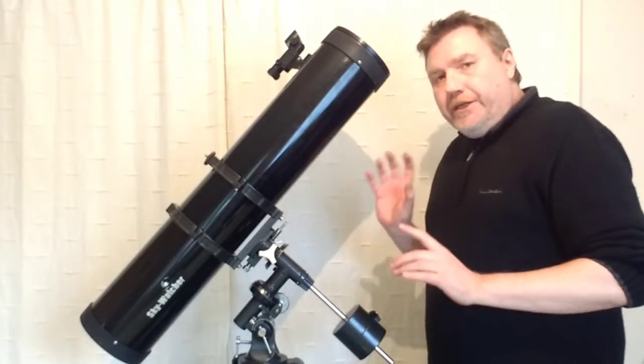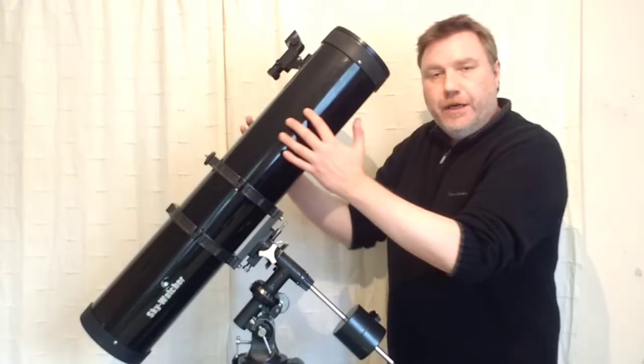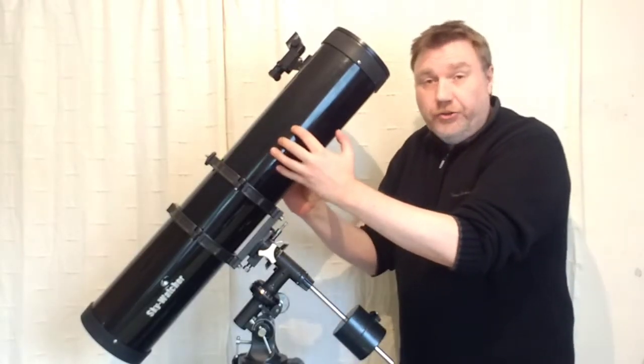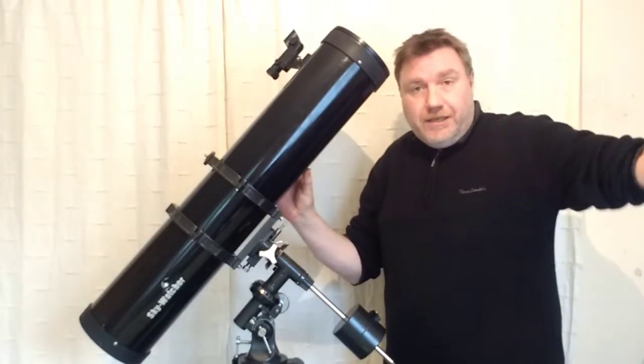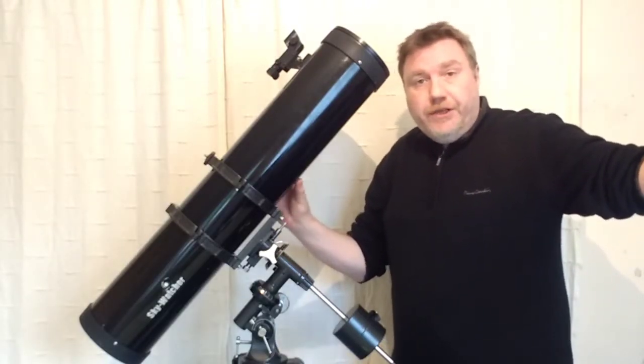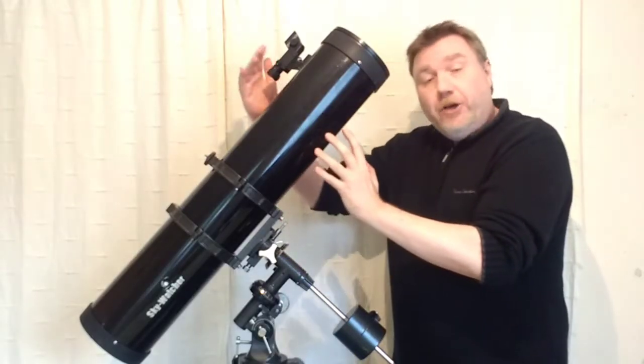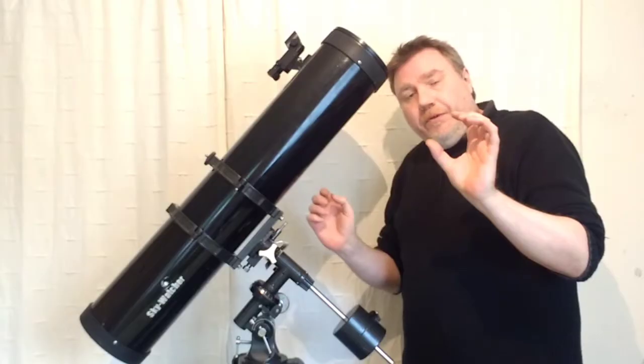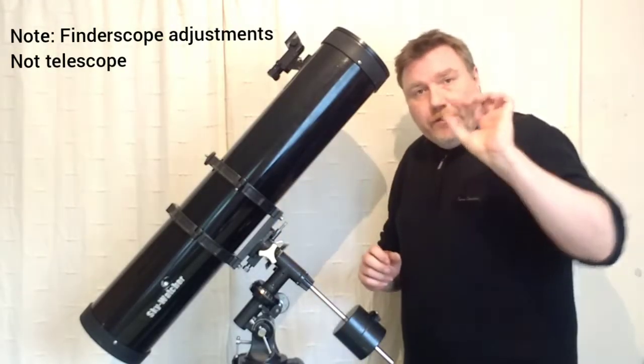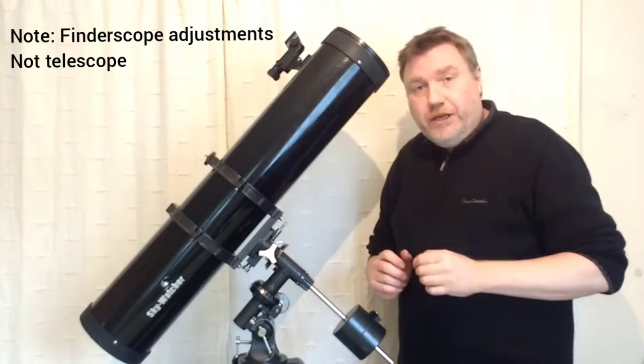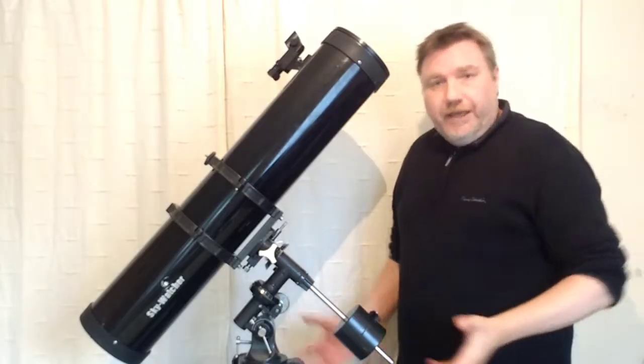The other thing you've got to make sure that it's set up is your finder scope. Make sure that your finder scope is in sync with your telescope, and this is easily done. You're best off doing this in the daytime, and find a static target over in the distance, a tree or something, and find it in your eyepiece, and then check it with the finder scope. You may need to just do some adjustments just to make sure that the target you're looking at is spot in the center of the crosshairs. And if you've done all that, you're now ready to take your telescope outside.